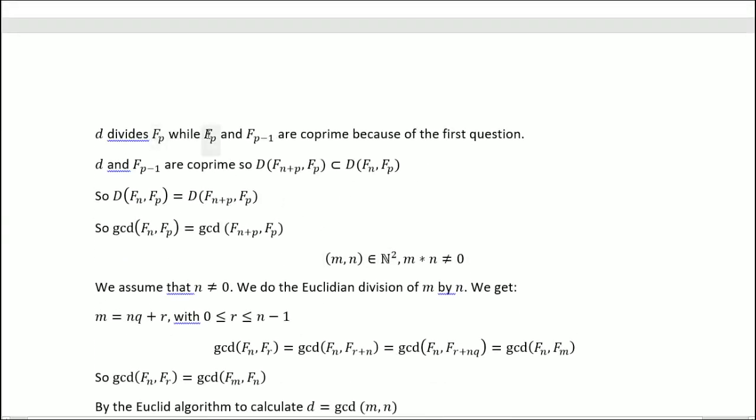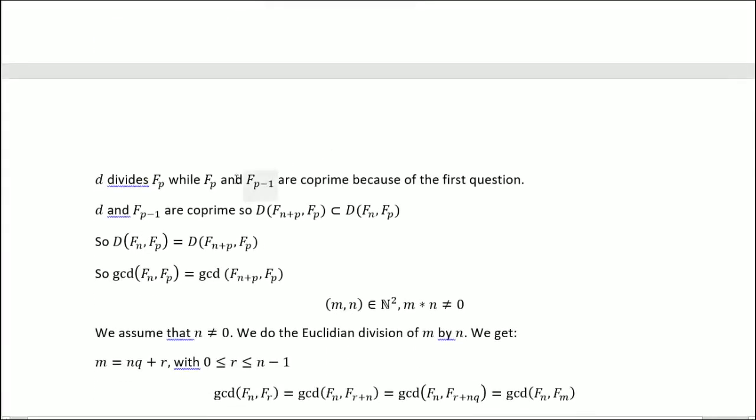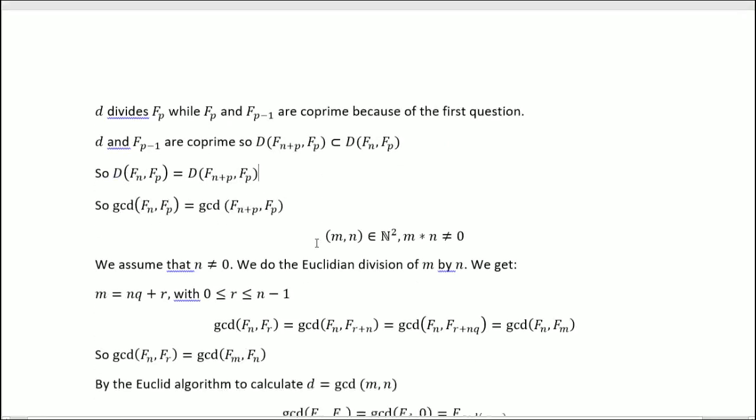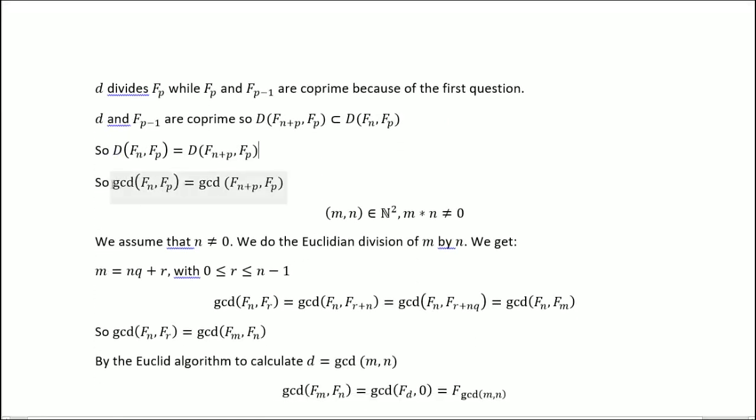So we can conclude that F_p and F_{p-1} are coprime because of the first question. So d, F_n, and F_{p-1} are coprime. So we get this. So the space of divisors are equal. And now we can apply the gcd because gcd is just a particular case of this. So if we apply gcd on that space, we get this.